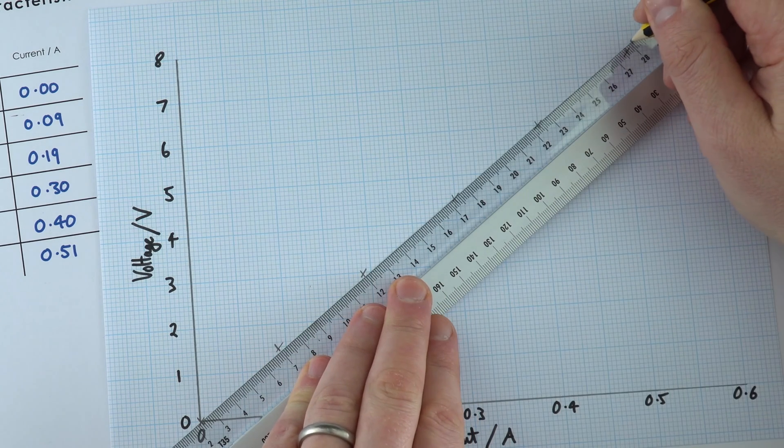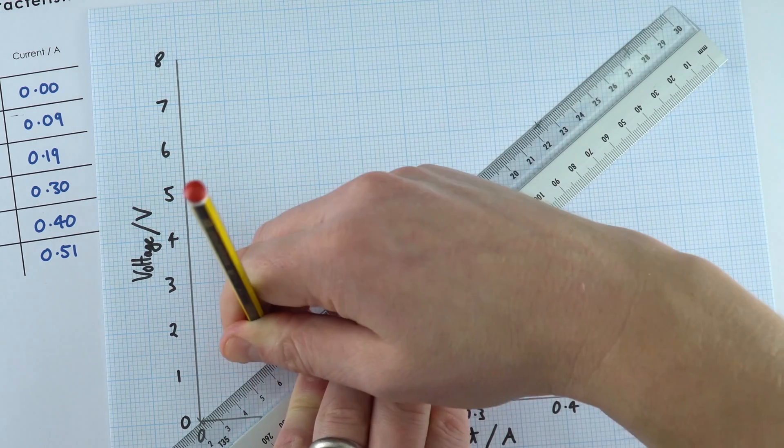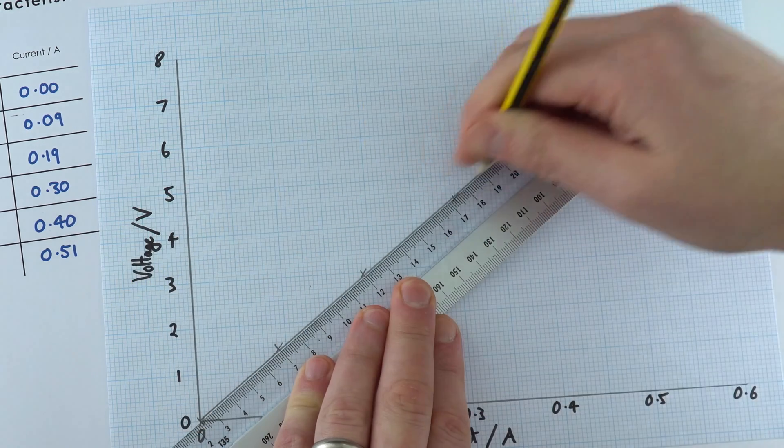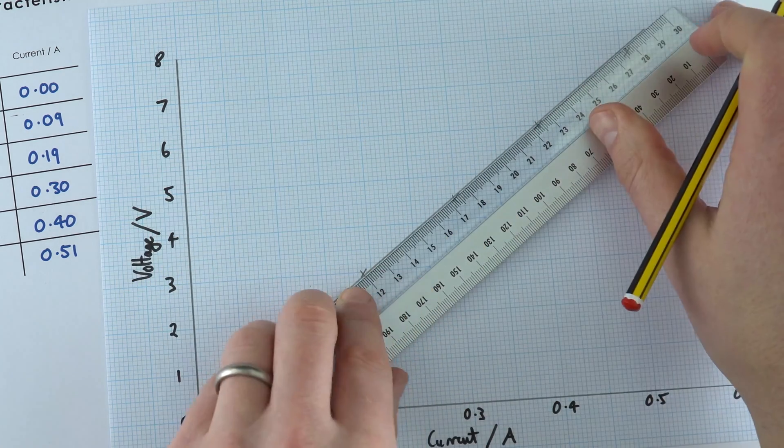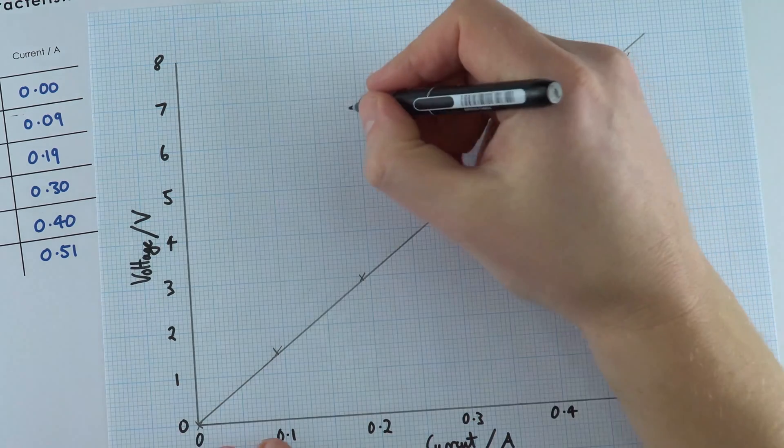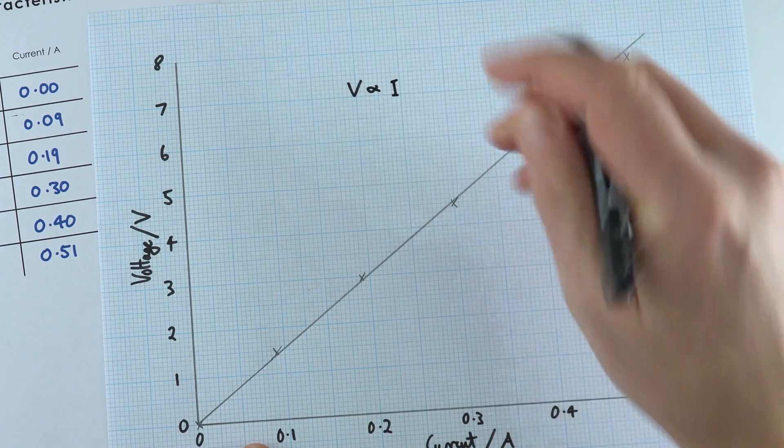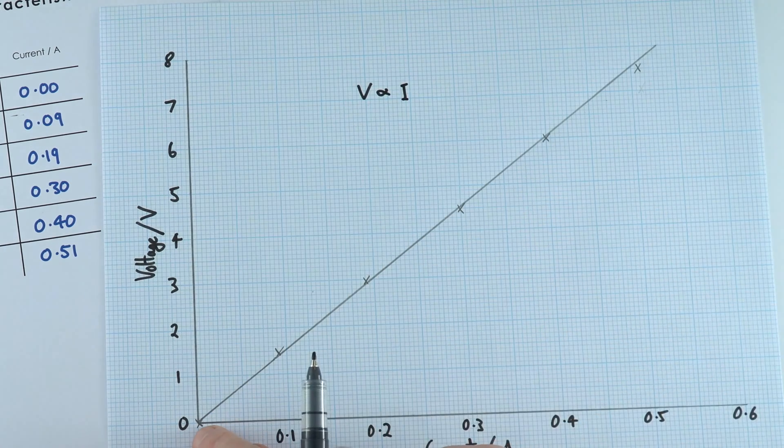And then I'm just going to draw in. I'm just going to go from here actually. I've got this line here. And what this tells us is that the voltage is proportional to the current. And that's because we have a straight line that goes through the origin.